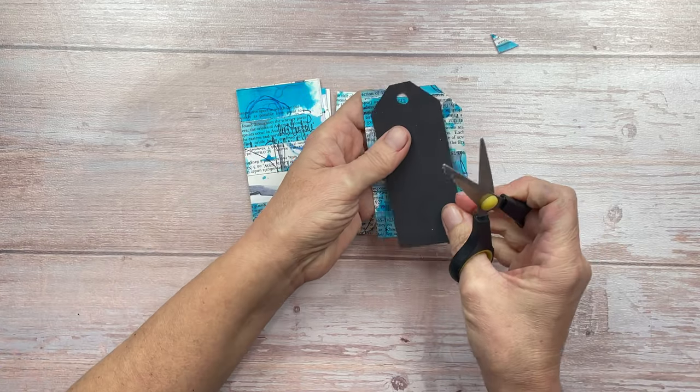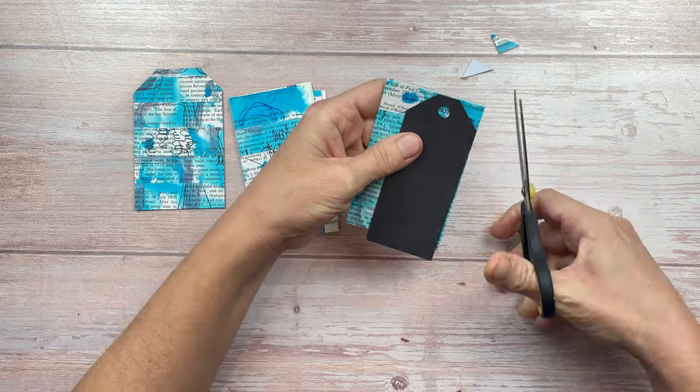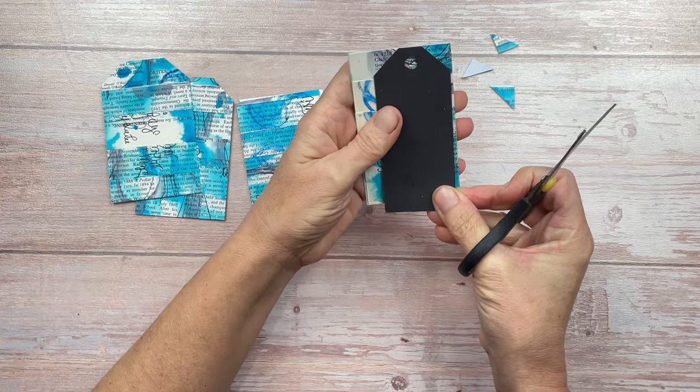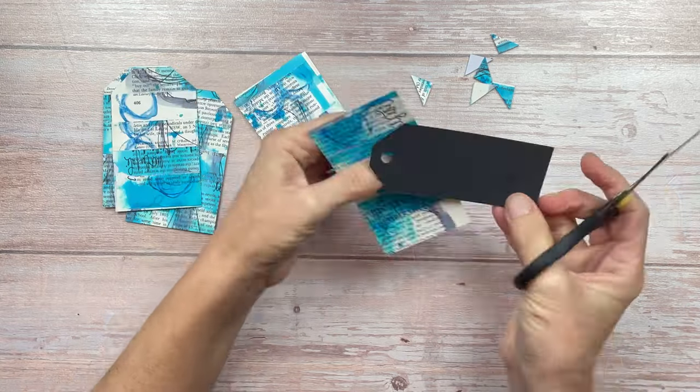As usual, I'm using a pre-cut tag or a store-bought tag to create the little corners. I just found this a really easy way to get everything accurate instead of trying to measure. It's at the right angle and it's a good shape tag.